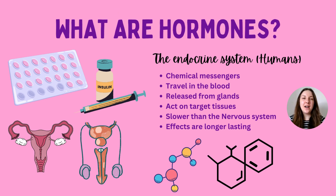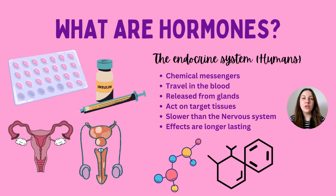Welcome back to the channel. I'm the GCSE Science Teacher and in today's video we're going to be learning about plant hormones for GCSE biology. A lot of us will understand hormones in a human biology context, and we're going to build on that knowledge today, because hormones are also released by plants. Essentially, a hormone is a chemical messenger that gets the organism to do something and respond to the environment.